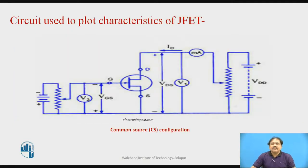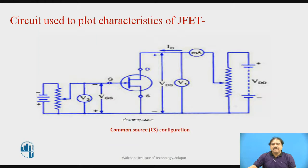This is the circuit we consider to plot the drain characteristics of the JFET. This is normally called a common source connection, and we use this configuration to plot the VI characteristics between the drain current and the voltage from drain to source, which is called the drain characteristics. The source is common and the gate is applied with a reverse voltage. The JFET used is of N-channel type, so the gate is made reverse biased compared with the source. In this N-channel, the gate is made of P-type material, so I am supplying the battery's negative terminal to confirm that the gate is reverse biased.